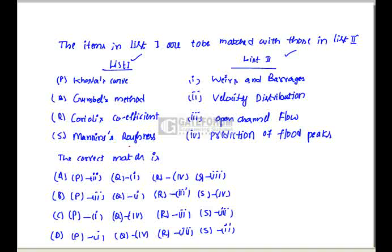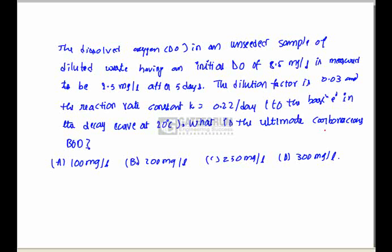Manning's roughness coefficient relates to open channel flow, giving matching S = 3. The Coriolis coefficient relates to velocity distribution, giving R = 2. The other two options: the cost-loss curve is used to predict weirs and barrages, and Gumbel's method is used for prediction of flood peaks. Therefore option C is correct.